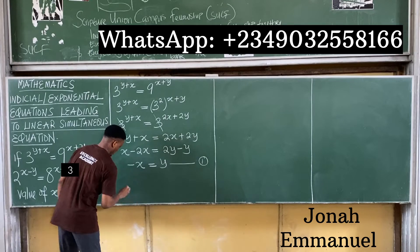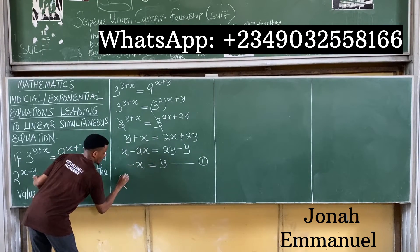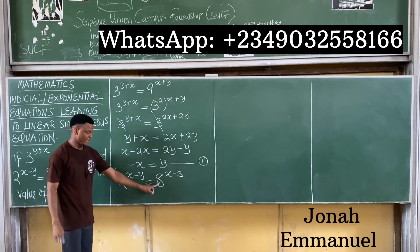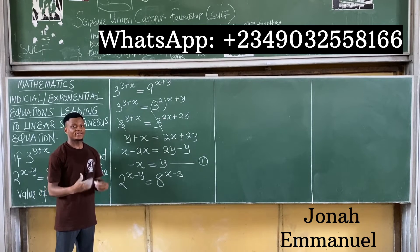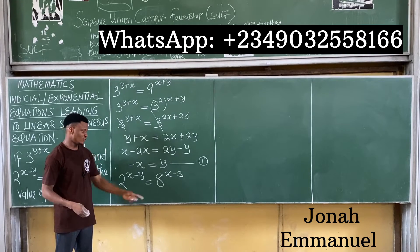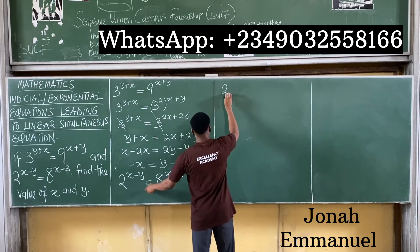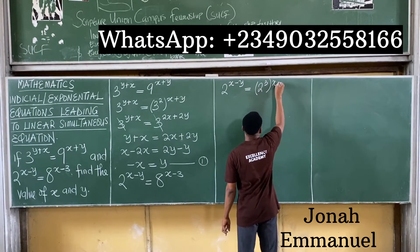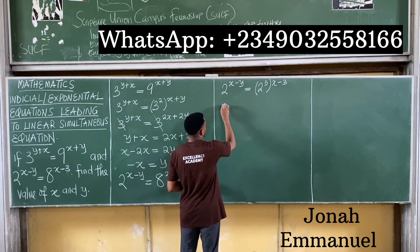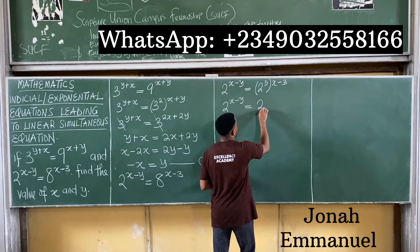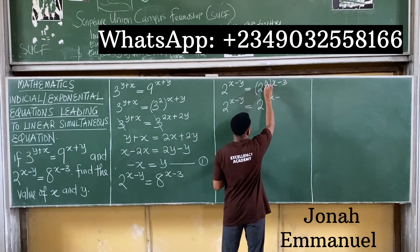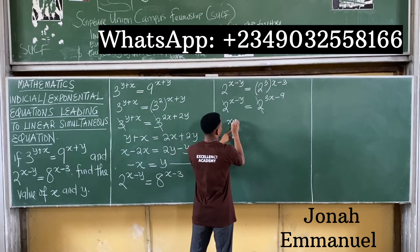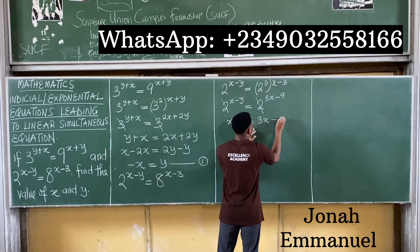Now the second equation: 2 to the power x minus y is equal to 8 to the power x minus 3. Express 8 in base 2: 8 is equal to 2 to the power 3, because 2 multiplied by itself 3 times gives you 8. So 2 to the power x minus y is equal to 2 to the power 3 into x minus 3. Expanding: 2 to the power x minus y is equal to 2 to the power 3x minus 9. Same base, so they cancel out, leaving x minus y is equal to 3x minus 9.